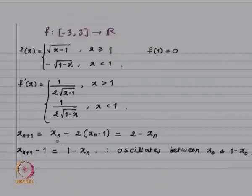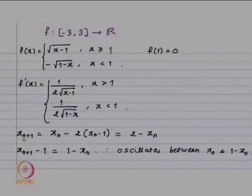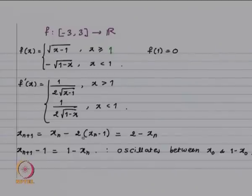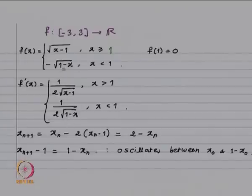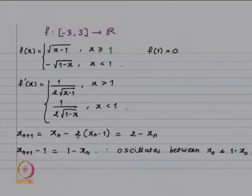Computing x_{n+1} = x_n − f(x_n)/f'(x_n): whether x_n > 1 or x_n < 1, f(x_n)/f'(x_n) equals 2(x_n − 1). So x_{n+1} = x_n − 2(x_n − 1) = 2 − x_n.